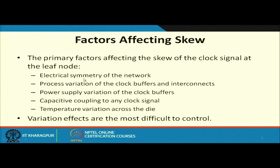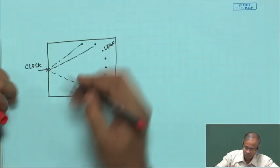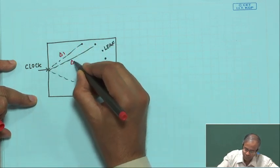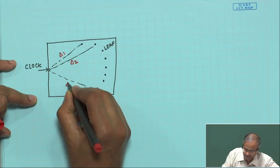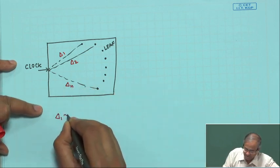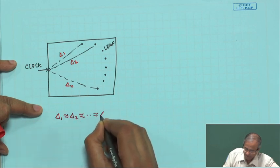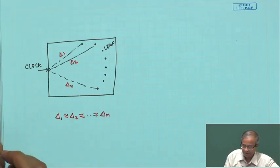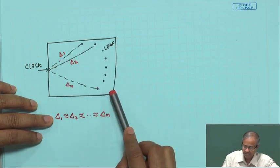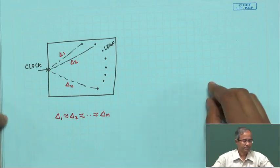So the first point is the electrical symmetry of the network. In this diagram, if delta 1 is the delay of the first path, delta 2 the delay of the second path, and delta n the delay of the nth path, what I want is that these delays should all be approximately equal. This is a requirement you have to satisfy, and these delays are in terms of electrical delay, incorporating the resistive and capacitive effects.